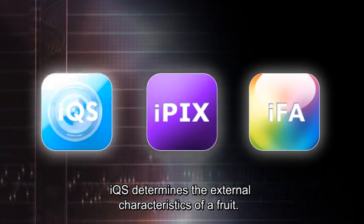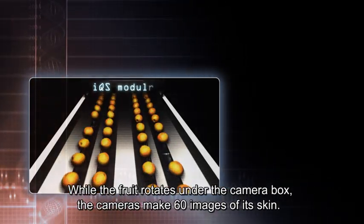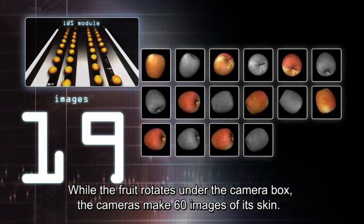IQS determines the external characteristics of a fruit. While the fruit rotates under the camera box, the cameras make 60 images of its skin.